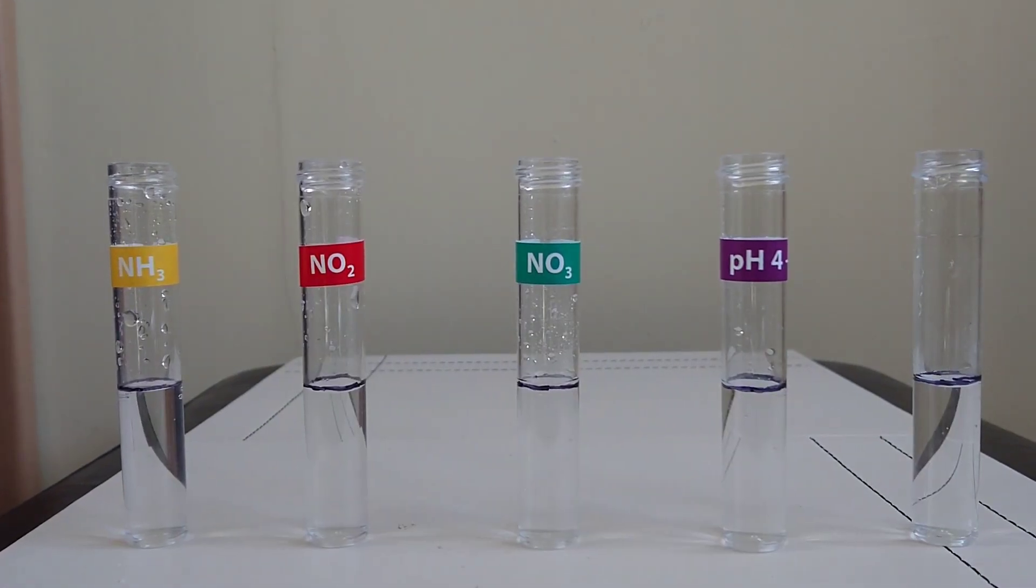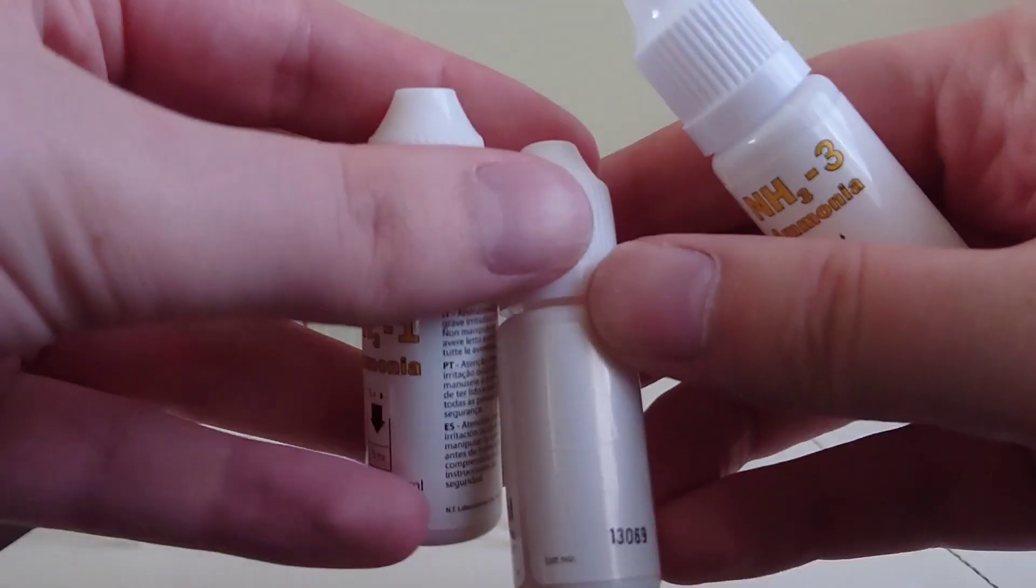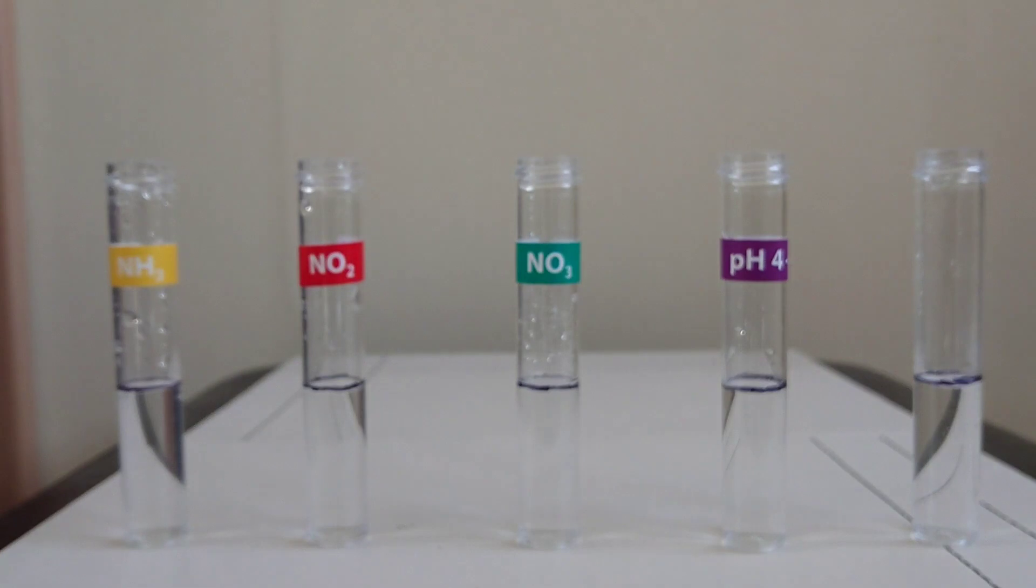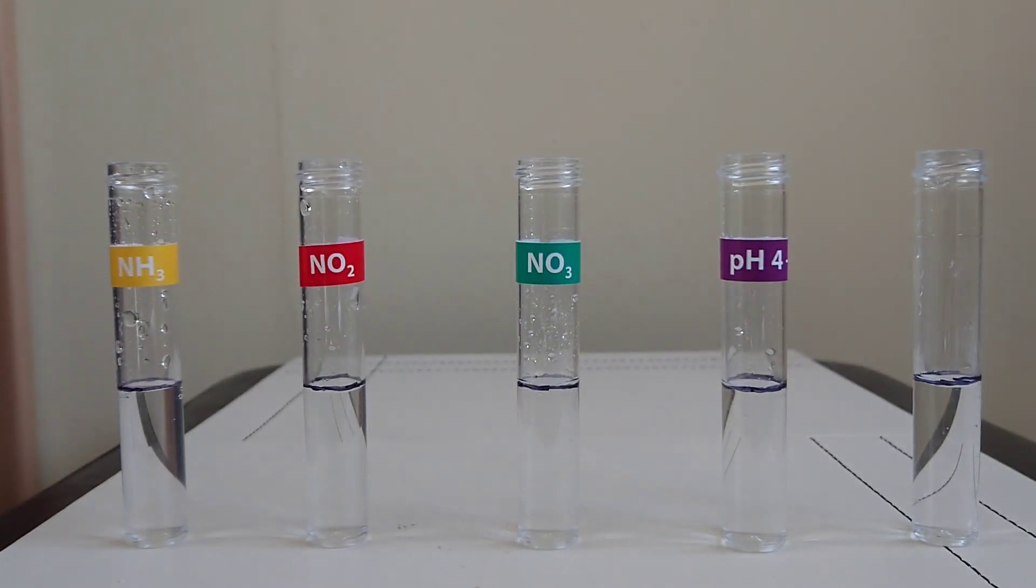So that's all those filled. First up, it's the ammonia test kit. This has three bottles and you put in five drops of each, and then give the test tube a good shake. It takes ten minutes to develop.